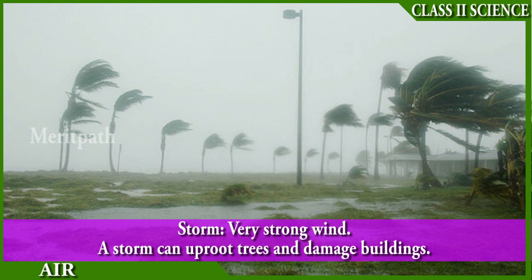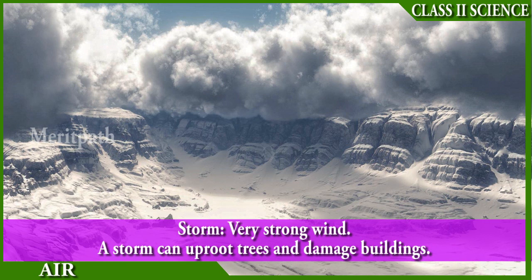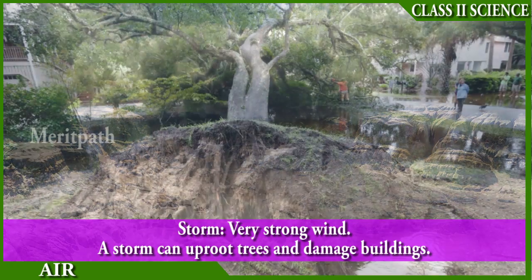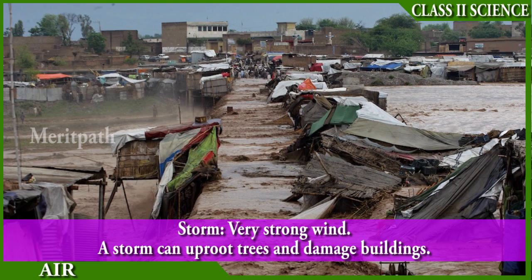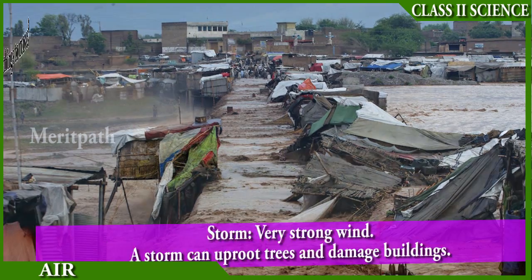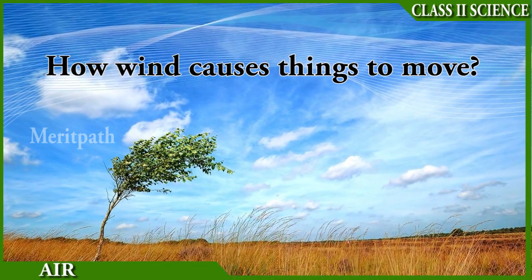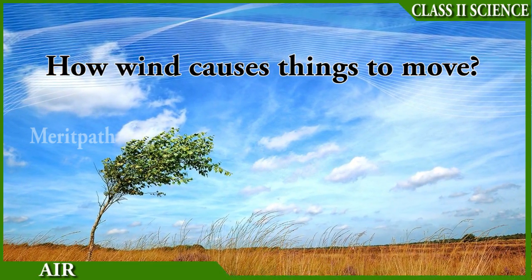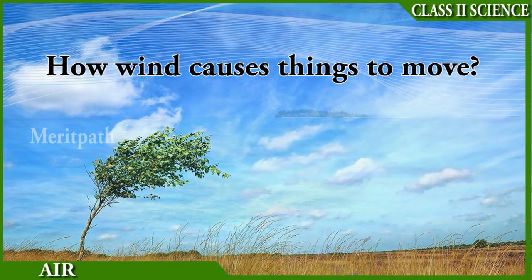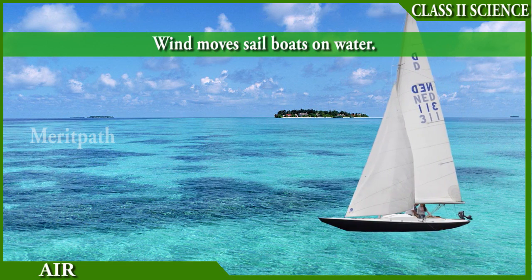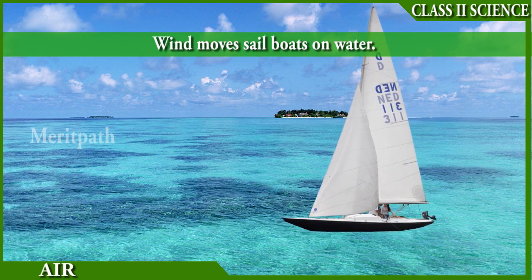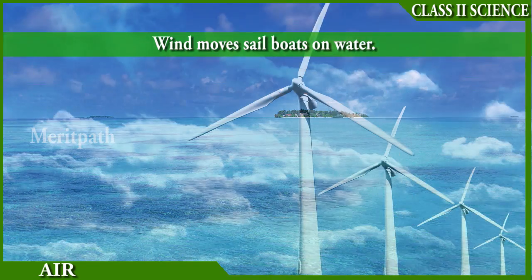A very strong wind with rain or snow is called a storm. These storms affect the trees, the land gets flooded, and houses get destroyed.